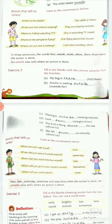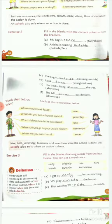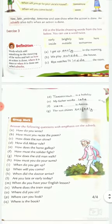Now we have Exercise 3. First, write the definition in your copy: words which add something to the meaning of the verb and tell us how an action is done, where it is done, or when it is done are called adverbs. Fill in the blanks choosing words from the box — you may use a word twice. For example: I get up early in the morning. We play outside the house. Rhea watches TV inside the room. Tomorrow is a holy day. My father works late at night. Here is Amina. The sun shines brightly.